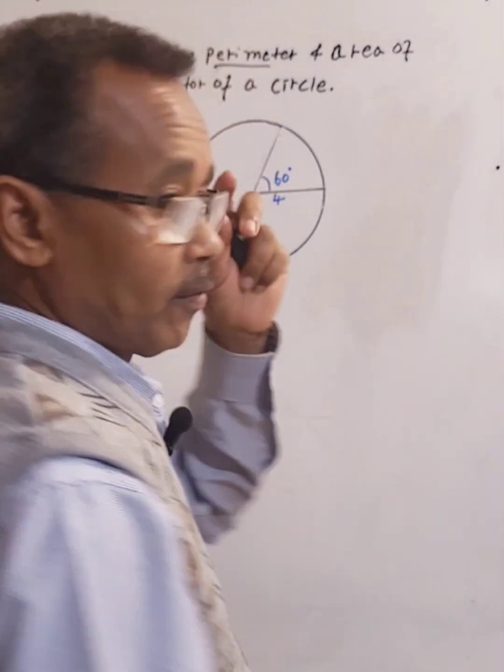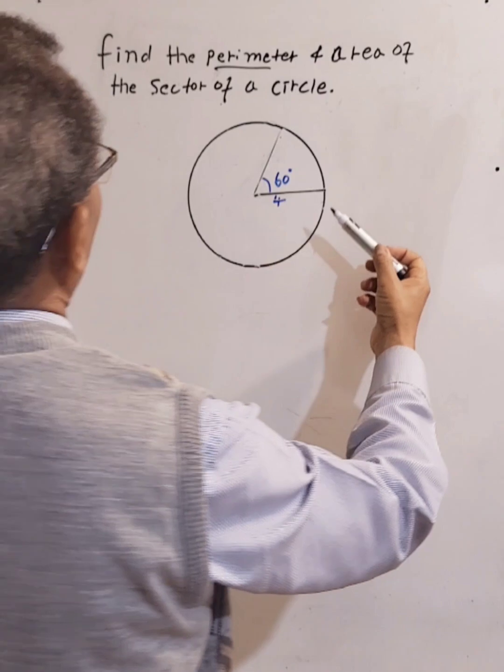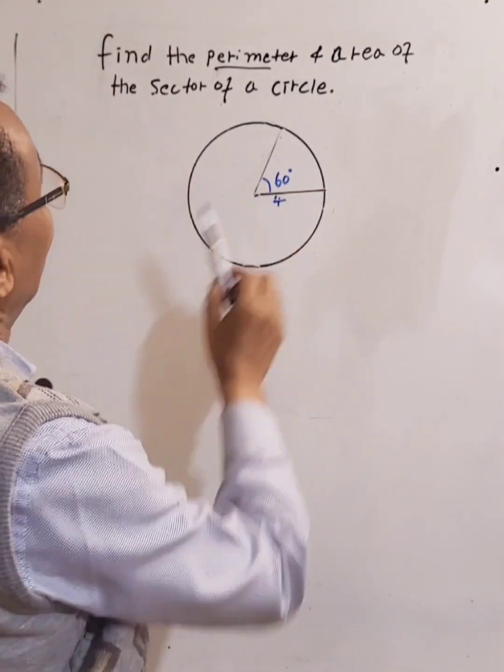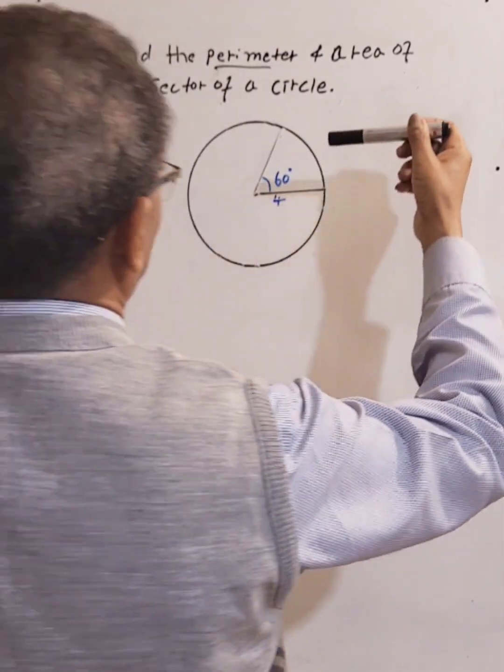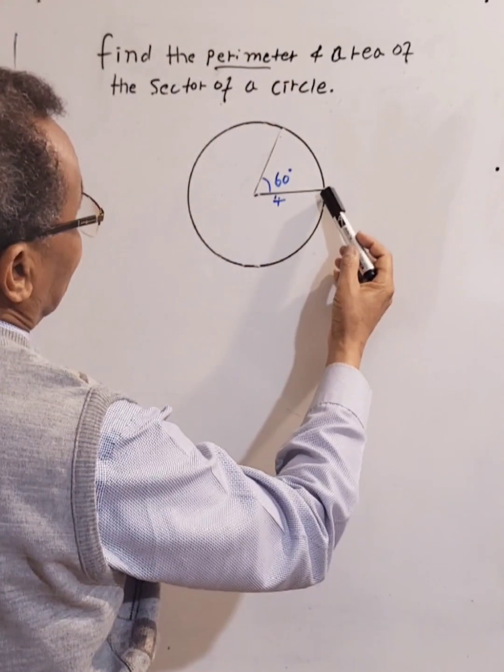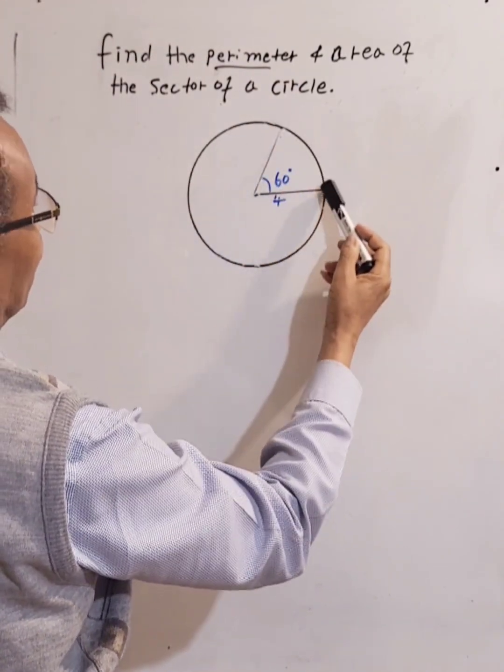Okay, hi everyone. Let's find the perimeter and area of the sector of a circle. We need to find the area and perimeter. Perimeter is the distance of the sector from this side all the way up to here.